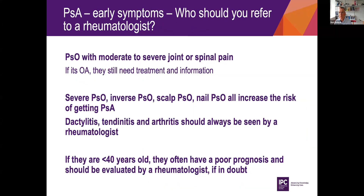So who should you send to a rheumatologist? If you have a psoriatic patient with moderate to severe pain or spinal pain, they should be referred for evaluation. If it turns out to be OA, no harm done — they still need information about what can be done for their OA. If they have severe psoriasis, inverse psoriasis, scalp psoriasis, or nail psoriasis, they have an increased risk of developing psoriatic arthritis, especially if they also complain about dactylitis and tendonitis. These patients should always be seen by a rheumatologist.